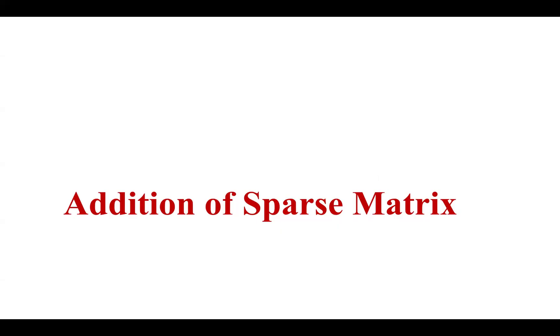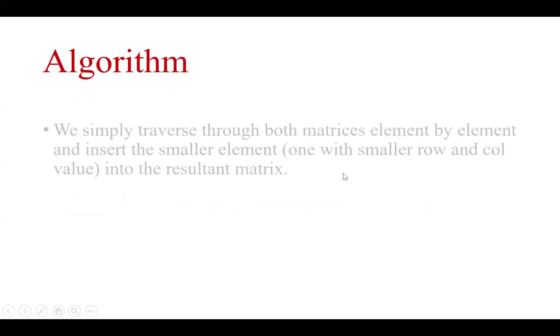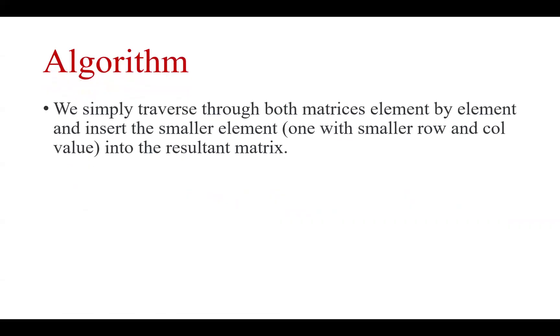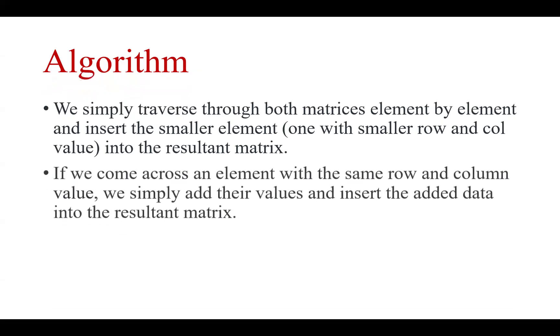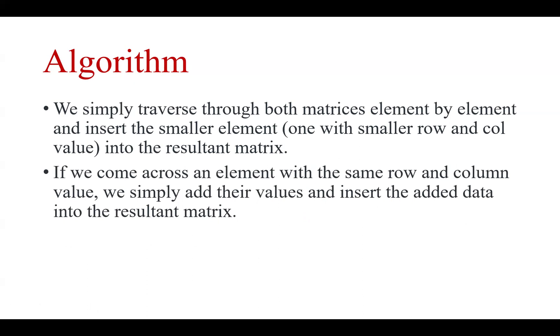In this video, we are going to learn how to add two matrices and perform the resultant matrix. The simple algorithm we have to follow: we simply traverse through both matrices element by element and insert the smaller element. Because the smaller element has the smaller row as well as column. If we come across elements at the same row and same column, that means both belong to the same position of the sparse matrix, and we have to add the value and insert the data into the resultant matrix.